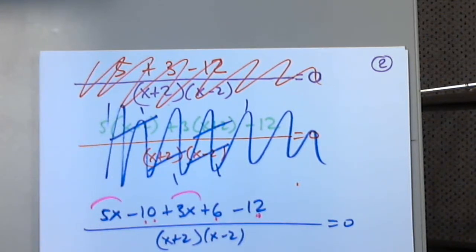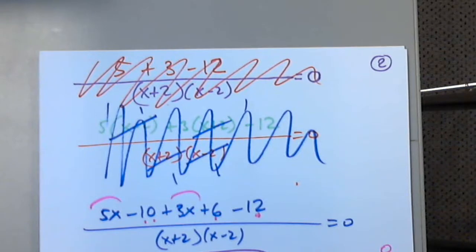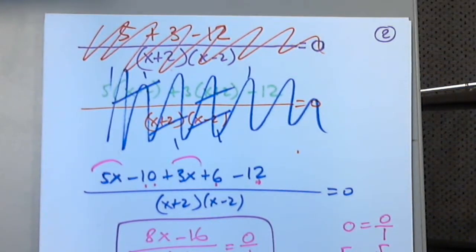I have x plus 2 times x minus 2 in the denominator. Can I write 0 as 0 over 1? Yes, because anything divided by 1 is itself. This is still a rational equation, but it has a very special name. It's called a proportion — a fraction equals another fraction.